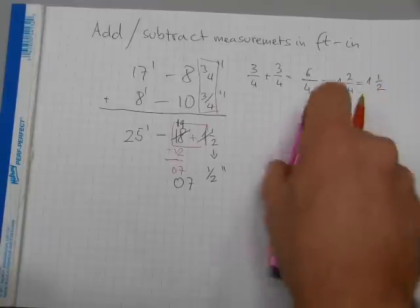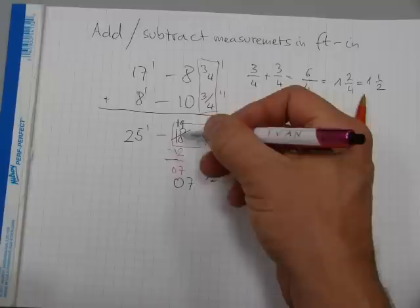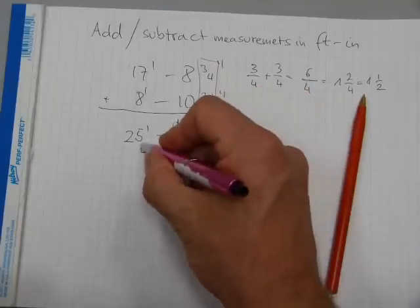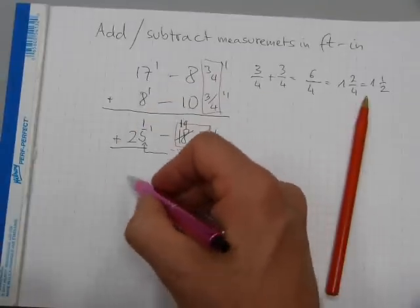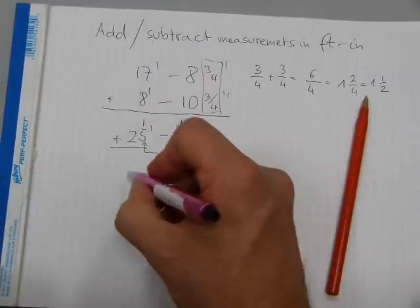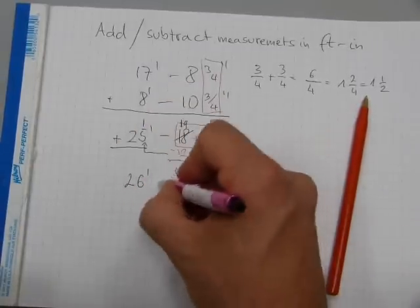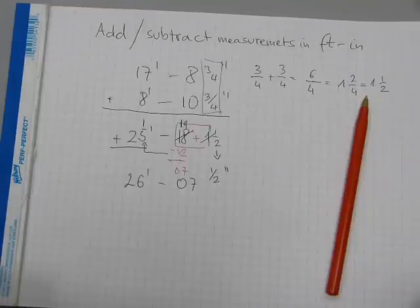And then because we subtracted 12 inches from this 19, this gets increased by 1 and we have to add it. 25 plus 1 is 26. 26 feet 7 inches and a half is the final answer to this addition problem.